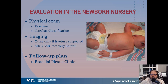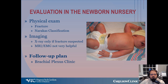Evaluation in the newborn nursery is the first step. We start with the physical exam, examining the baby for any fractures including clavicle fractures. The movement of the arm is observed — shoulder abduction, elbow flexion, wrist extension, finger flexion — and that helps us classify the injury. We use the Neuracus classification for brachial plexus palsies. The next step would be imaging. X-rays are really only useful if a fracture is suspected. Unfortunately, MRIs and EMGs are not very helpful — we'll talk more about those in a few minutes.